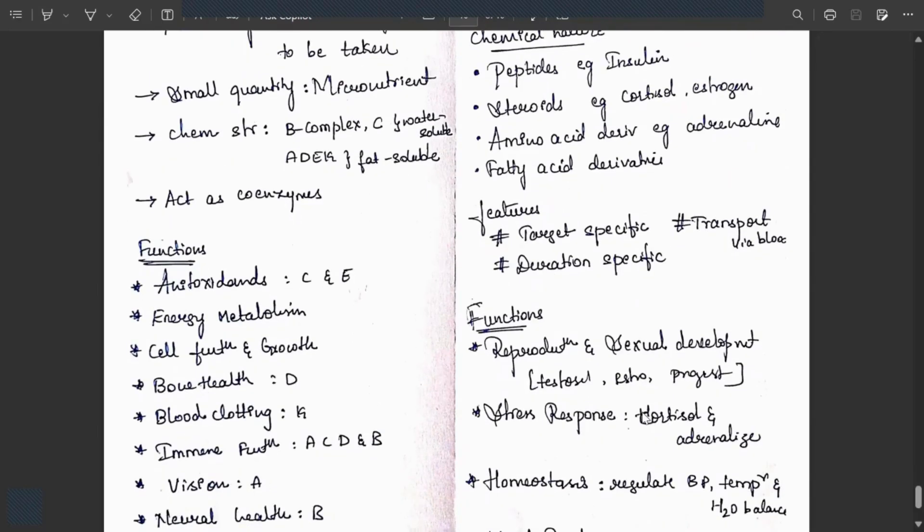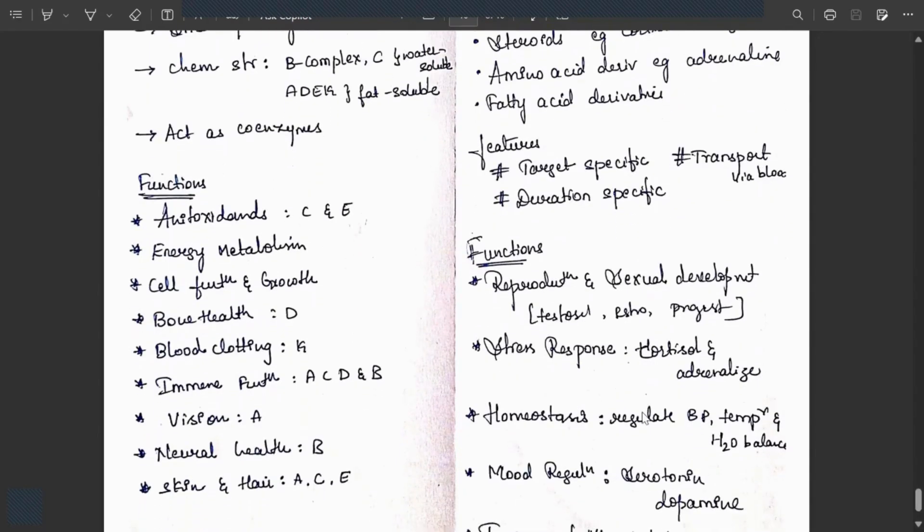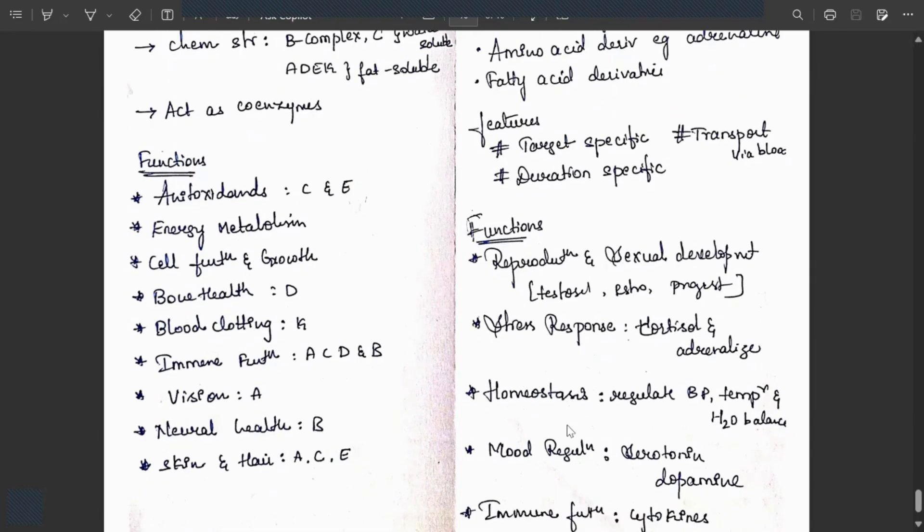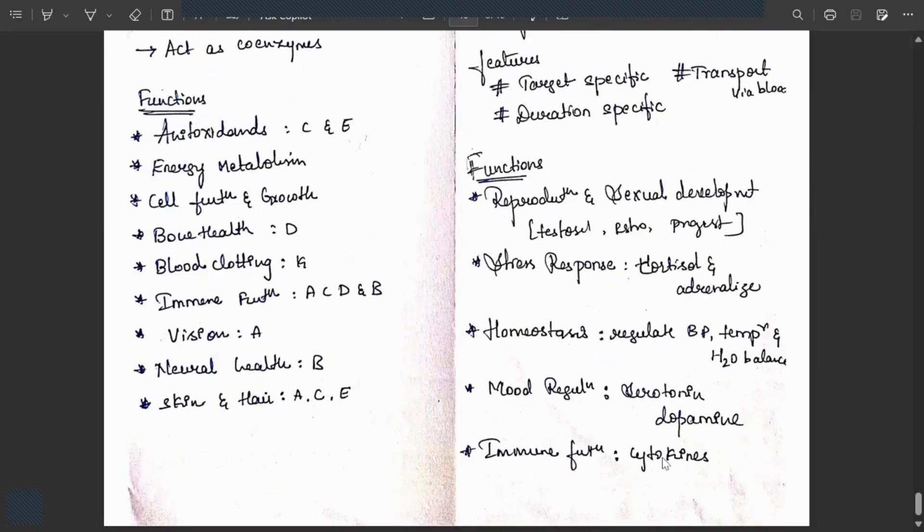Functions: reproduction and sexual development by testosterone, estrogen and progesterone. Stress response by cortisol and adrenaline. Homeostasis regulates blood pressure, temperature and water balance. Mood regulation by serotonin and dopamine hormones. Immune function by cytokines.